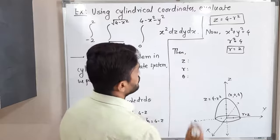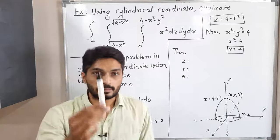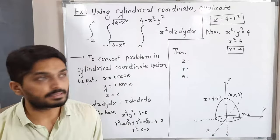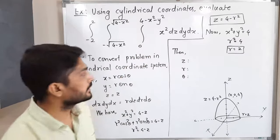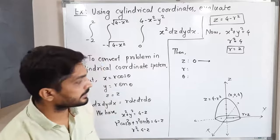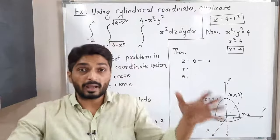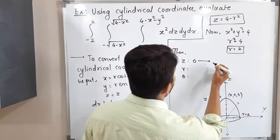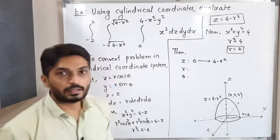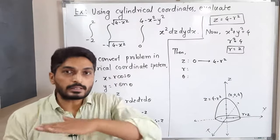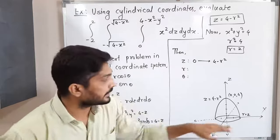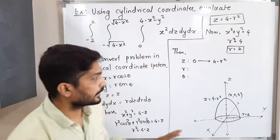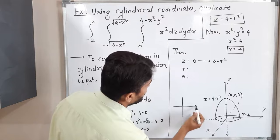Now let us find the limits. For z, consider a vertical strip parallel to the z-axis: it is bounded below by the xy-plane (z = 0) and above by the paraboloid (z = 4 - r²). So z varies from 0 to 4 - r². For r and θ, we take the projection onto the xy-plane.